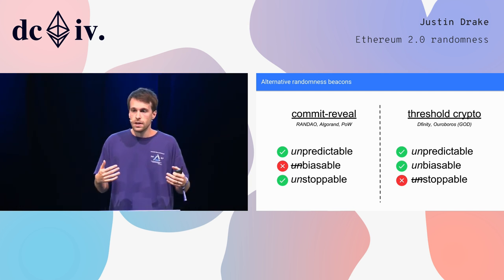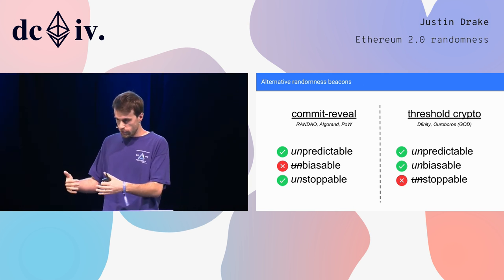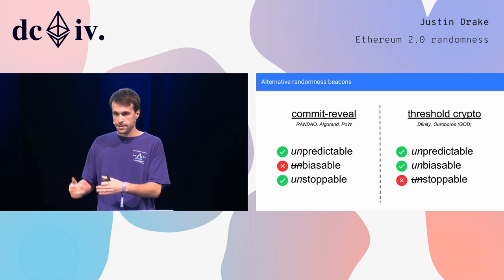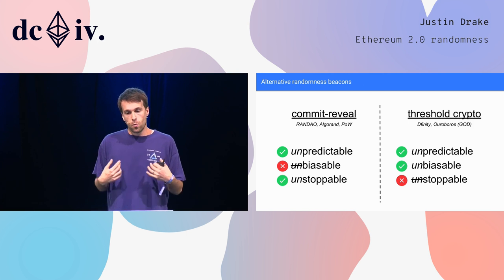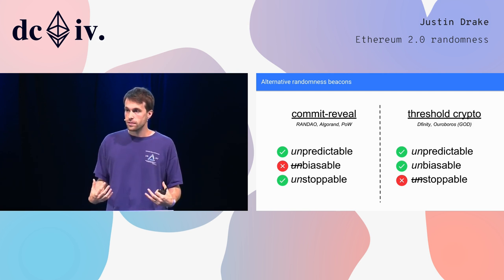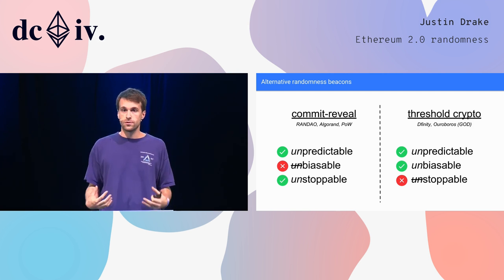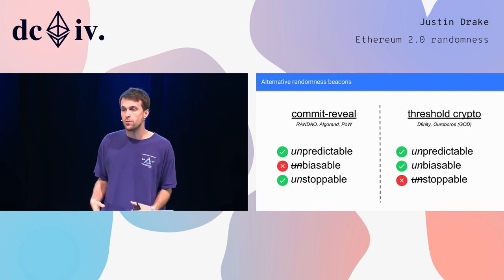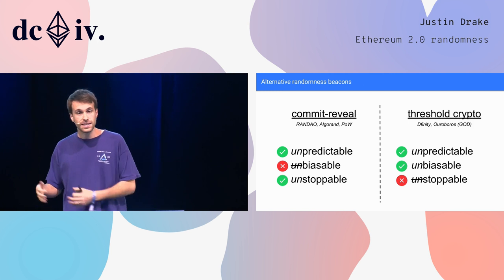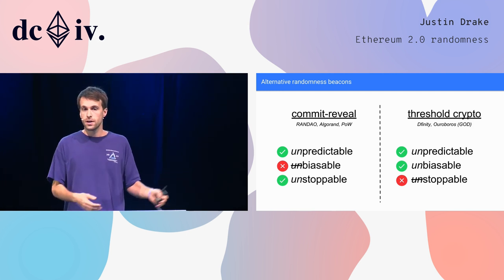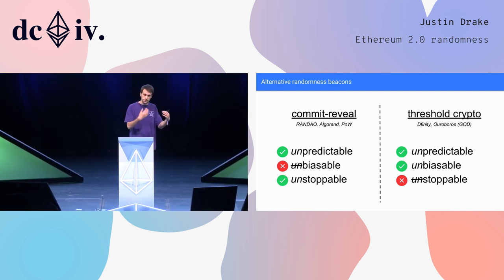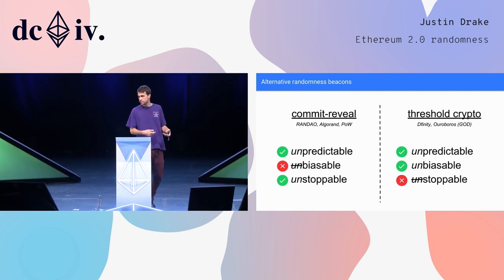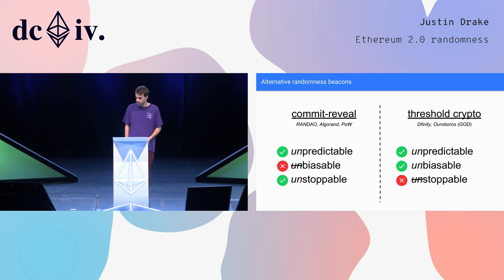To give a bit more context on this last condition: one of the design goals of Ethereum 2.0 is to survive World War 3. We're assuming that 80% of the nodes could go offline and we still want the system to run.